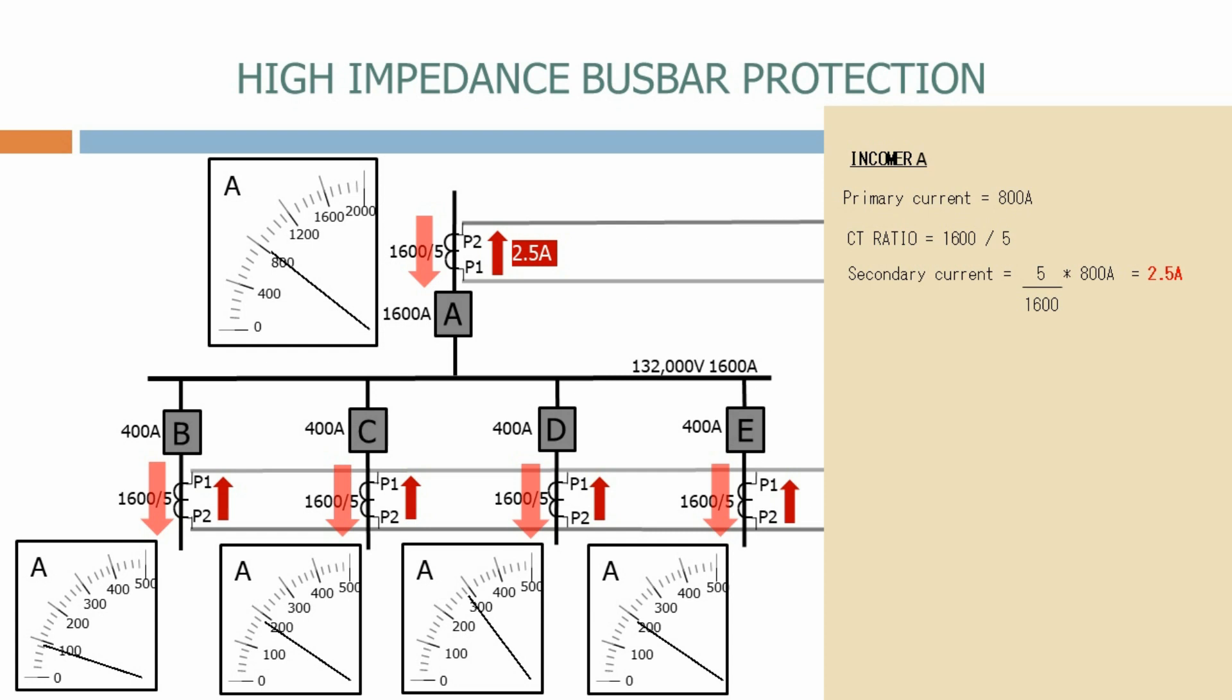Let's now look at feeder B. On this circuit the primary current is 100 amps. Therefore using the same equation, the secondary current is 0.31 amps. We can then calculate that the secondary current on feeder C is 0.63 amps, feeder D is 0.94 amps, and feeder E is 0.63 amps.